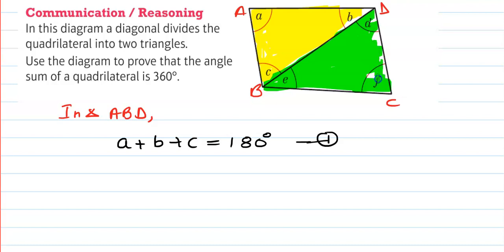So what is happening here now? Let's write down here. In triangle DBC, angle D plus E plus F is also 180 degrees. That is equation two.